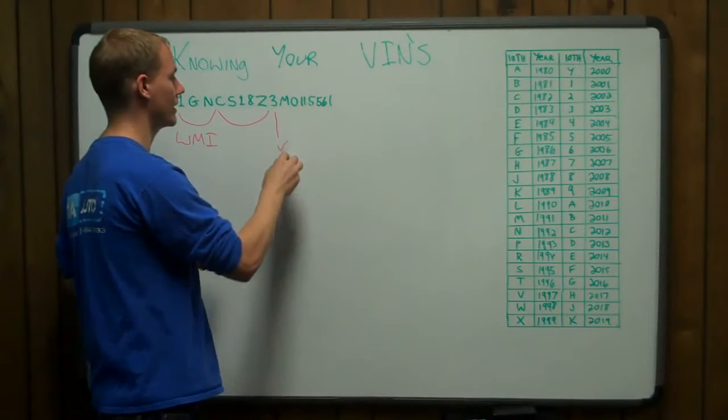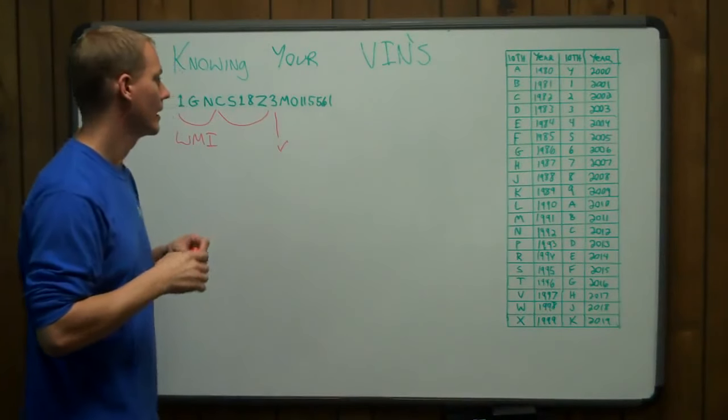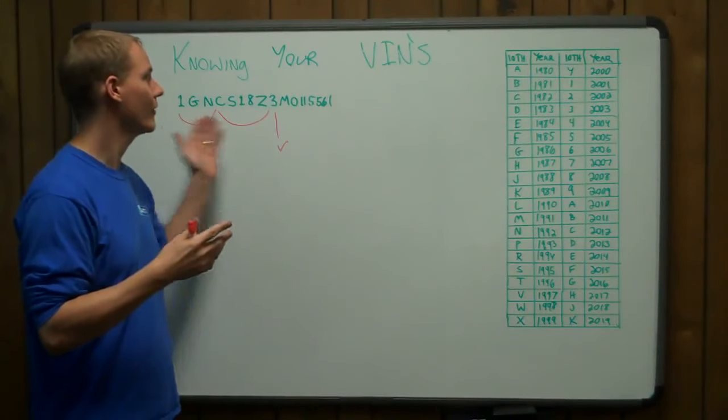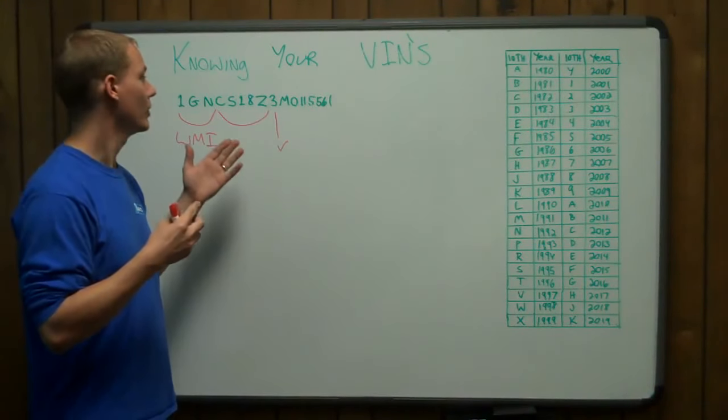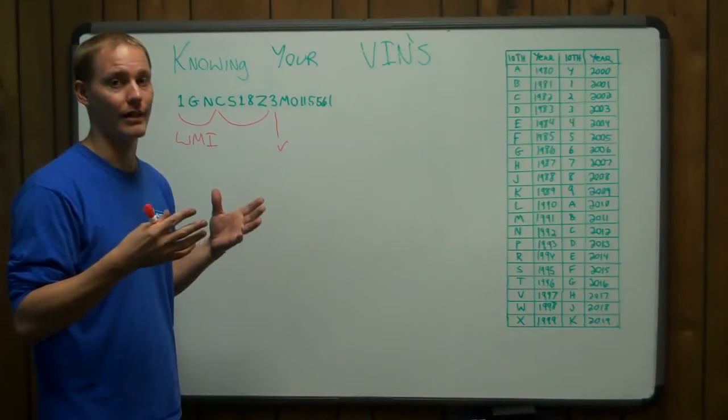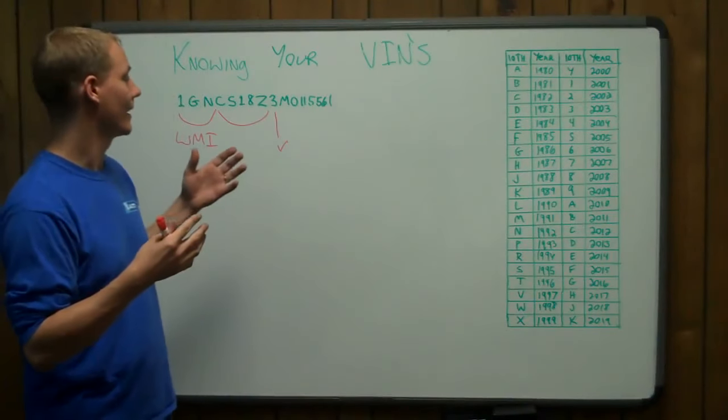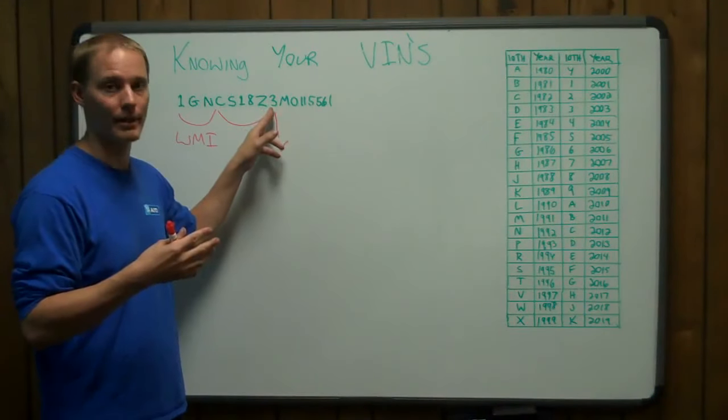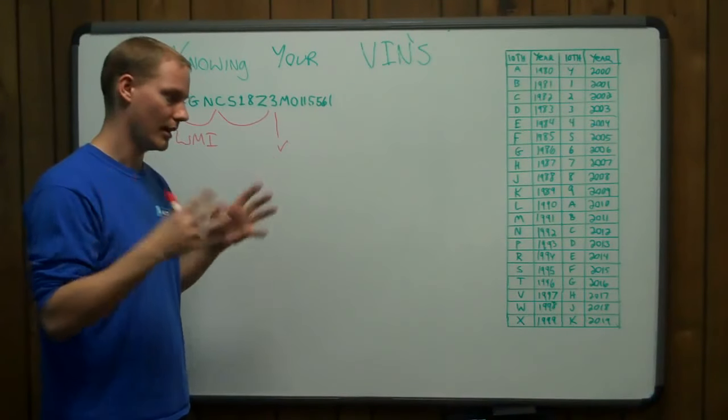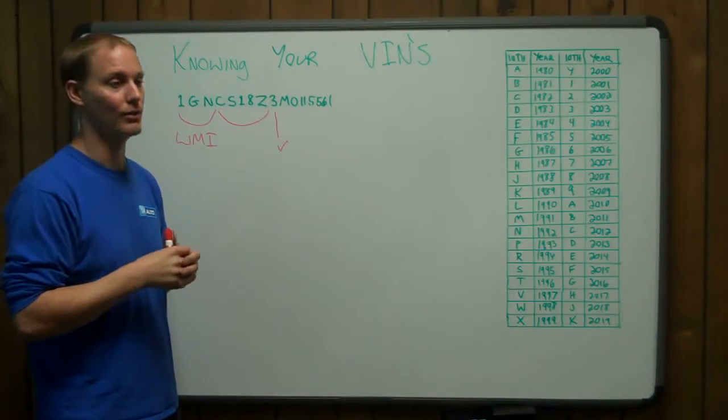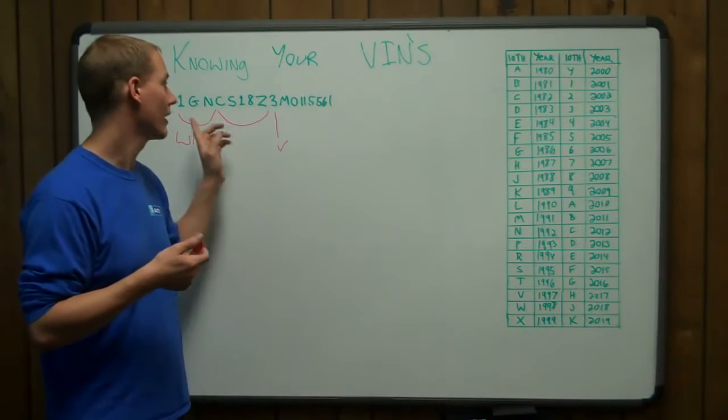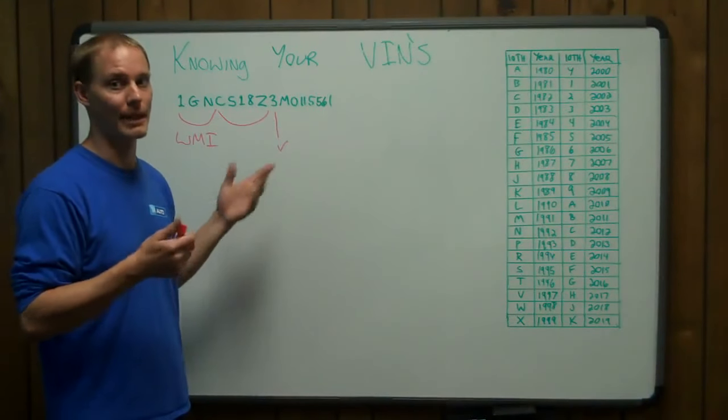The ninth digit, right here, is called a check digit. And they call it a check digit because the purpose of it is to check the rest of the VIN to make sure it's legit. But you do this by putting it through some complex math, which you can find on the internet if you go browsing around for it. You input numbers throughout the VIN, and through the math it spits out a number, and hopefully it's the right one. Hopefully it's a 3 in this case. If it comes out as a 5, you know that these other numbers in the VIN are not legit. Somebody made up this VIN.